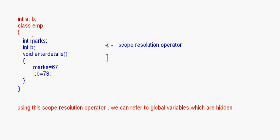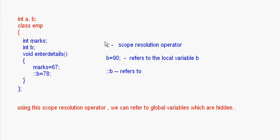Why do we use the scope resolution operator? The scope resolution operator is used so that we can refer to global variables that have been hidden by local ones. If I write only b = 90, this refers to the local variable b. But if I write ::b, this refers to the global variable b. This way I can assign values to both the local and the global variable.